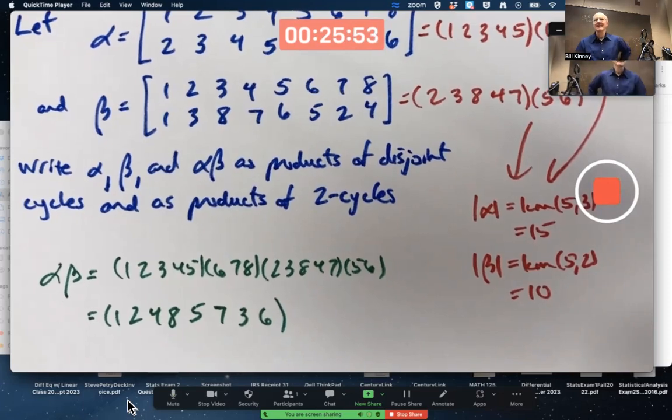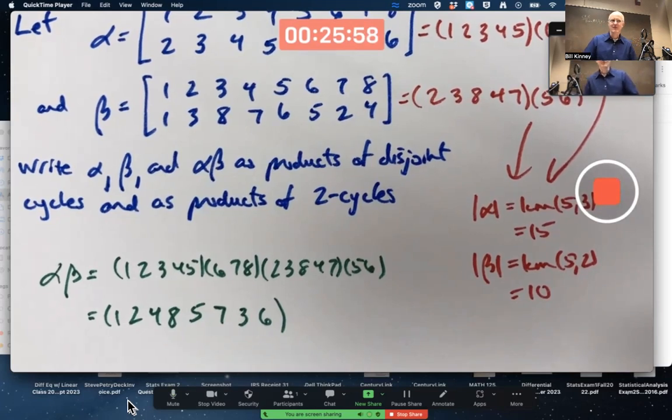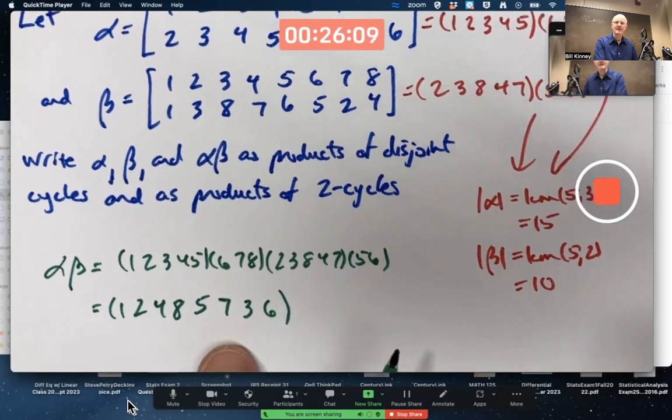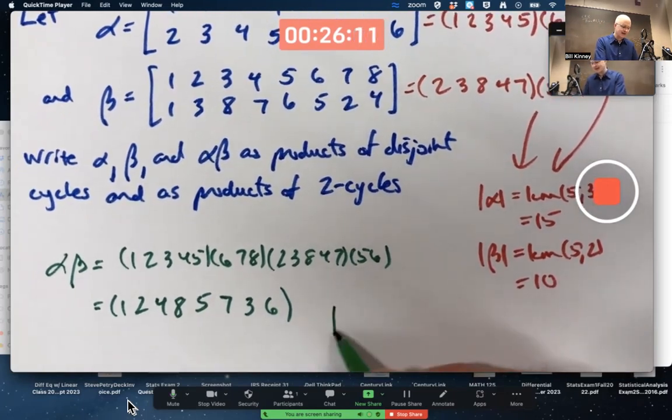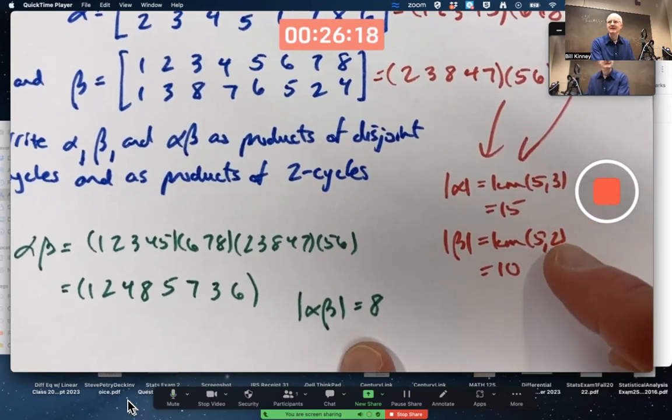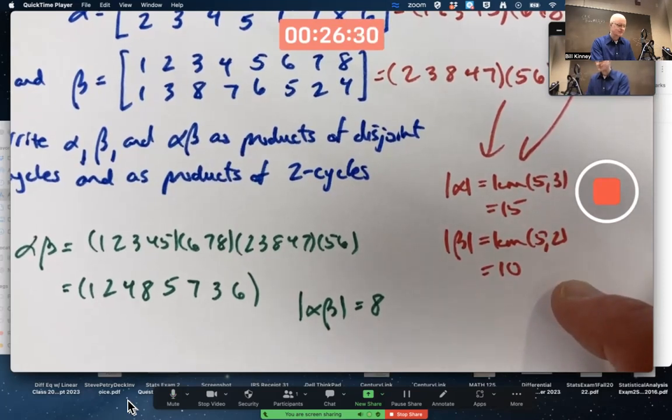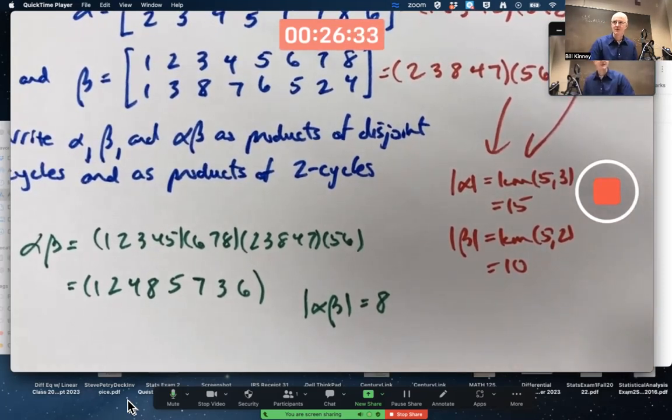I went kind of fast, right? Probably faster than you're able to at the moment, unless you get some practice. But it looks like, if I did not make a mistake, we have an 8 cycle there. The order of alpha composed beta is 8. Notice there seems to be no relationship between these things. And that is true. The order of a product may have nothing to do with the order of the individual factors. In general, at least. There are some special cases where it does.